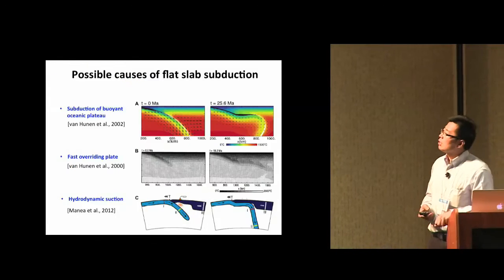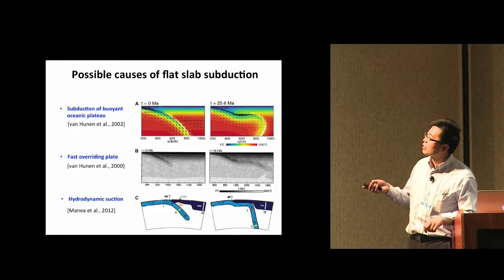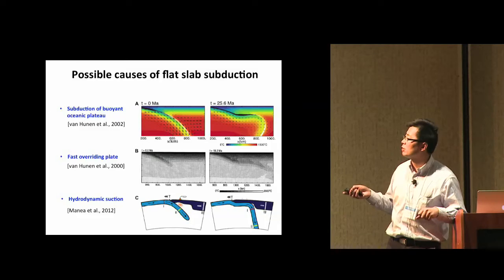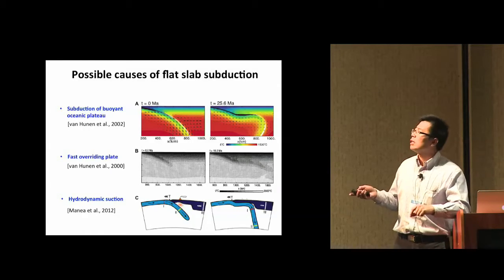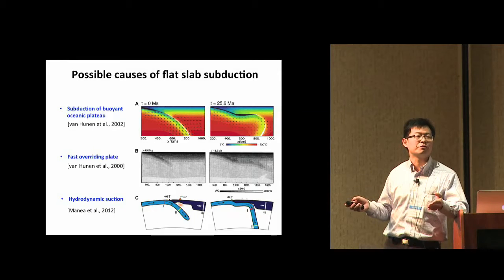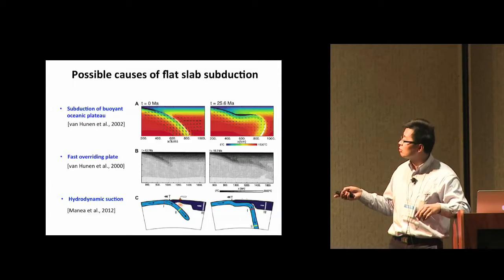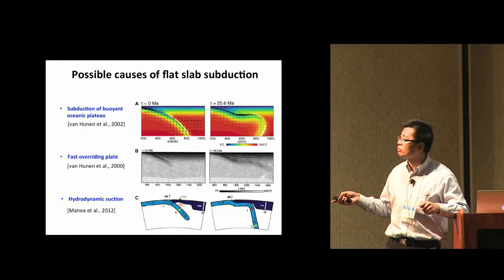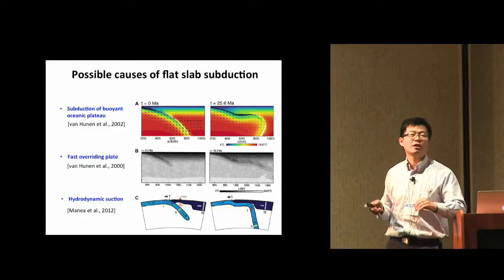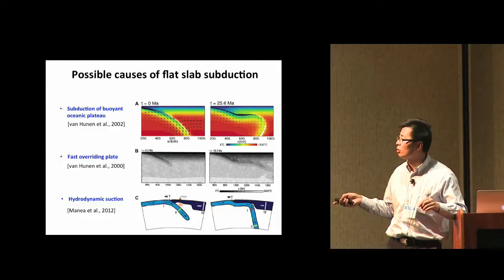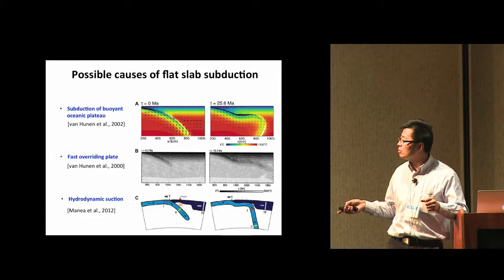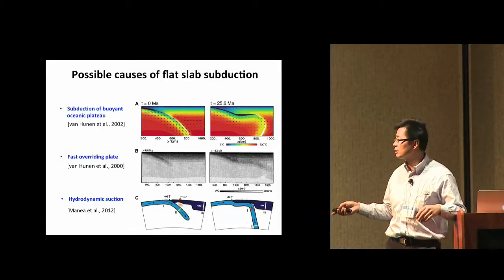For flat slab subduction formation there are different theories — all conceptual models. The first hypothesis is that when the subducting plate carries over-thickened oceanic crust, which is buoyant relative to the mantle, it may temporarily force the slab to flatten. A second hypothesis is that if the overriding continent moves very fast toward the trench, the slab doesn't have enough time to sink, forming a flat geometry. The third is hydrodynamic suction from corner flow, which can generate suction force causing the slab to flatten.